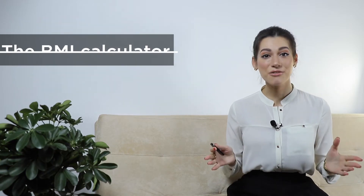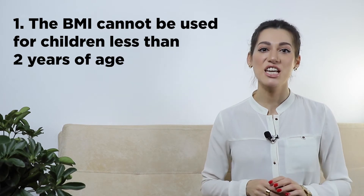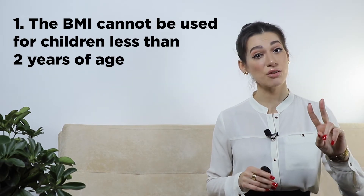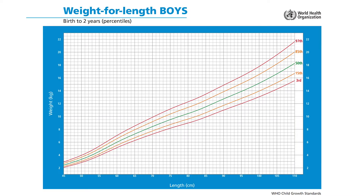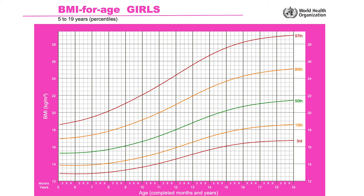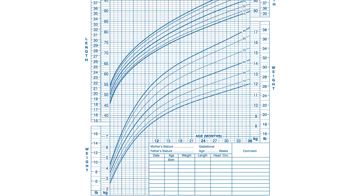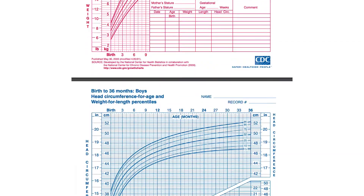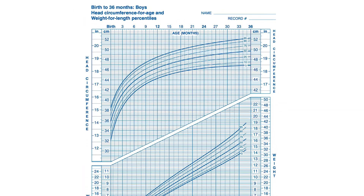However, this simple and fast method has several limitations. The first limitation: BMI cannot be used for children less than 2 years of age. For children less than 2 years of age, consult the WHO Child Growth Standards or CDC Clinical Growth Charts. These standards take into account weight, height, age and gender, as well as head circumference and the ratio of these indicators.